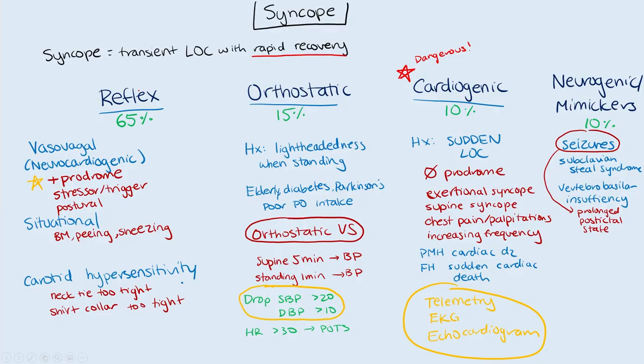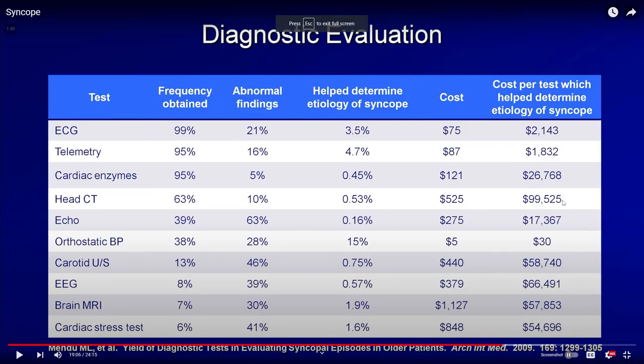To summarize, understanding the three big buckets — reflex, orthostatic, and cardiogenic — and differentiating reassuring signs from concerning ones is key. Cardiogenic syncope from an arrhythmia or valvular problem typically presents without a prodrome, with exertional or supine syncope. This framework explains why we routinely get orthostatic vital signs, place patients on telemetry, obtain an EKG, and usually get an echo. There's also a great video by Dr. Strong on YouTube that goes over the diagnostic utility of each of these tests.